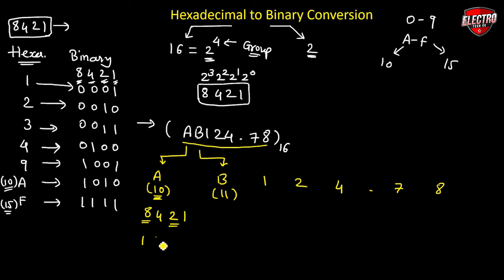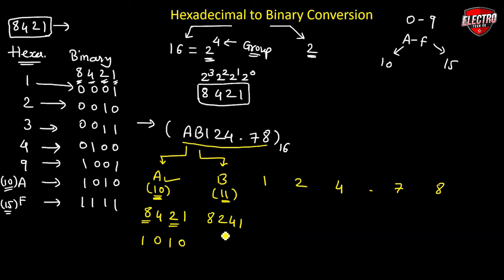So for A: 8×1 + 4×0 + 2×1 + 1×0 = 8 + 2 = 10, giving binary 1010. To convert B (which is 11) into binary, we use 8 plus 2 plus 1: 8 + 2 = 10, plus 1 = 11, giving binary 1011.